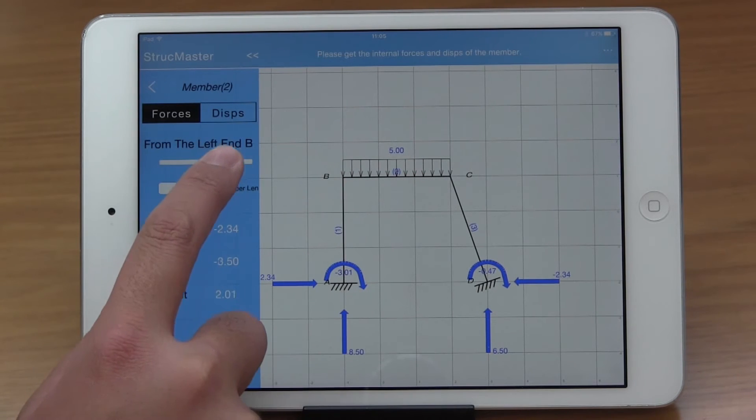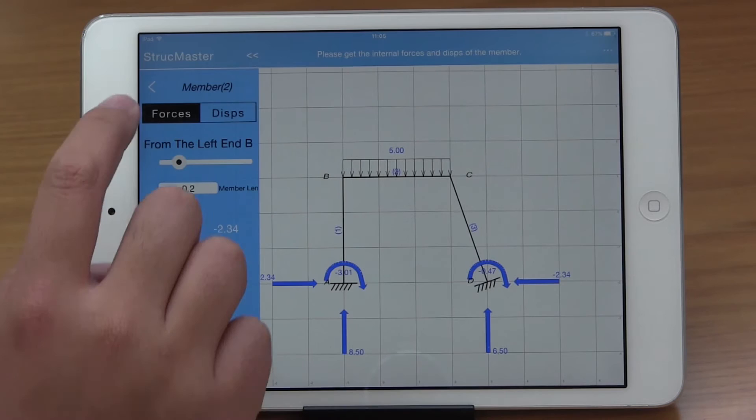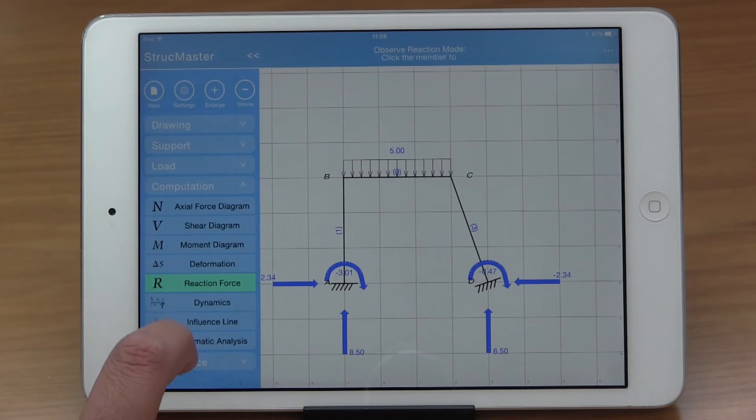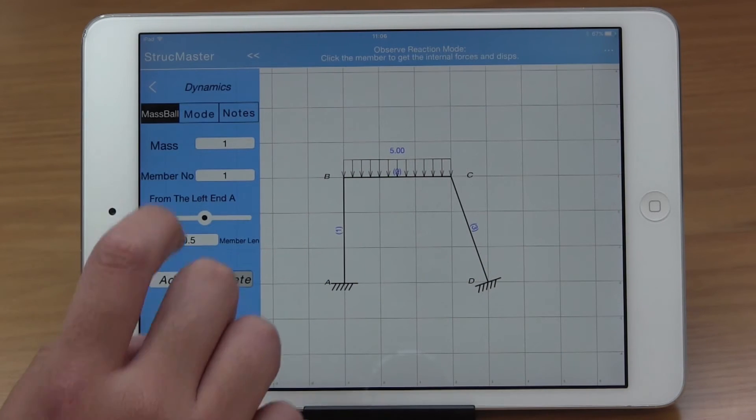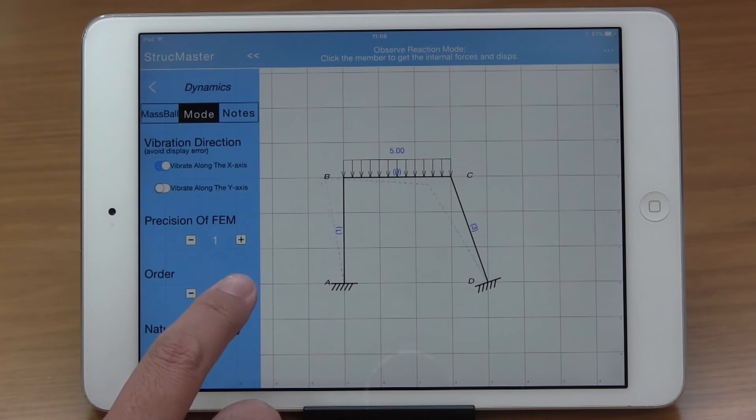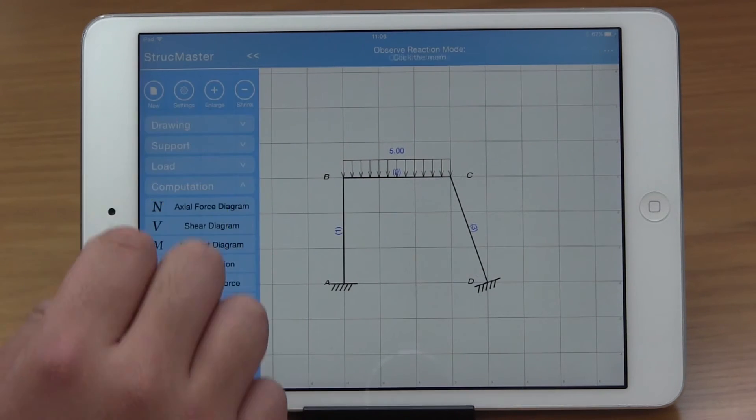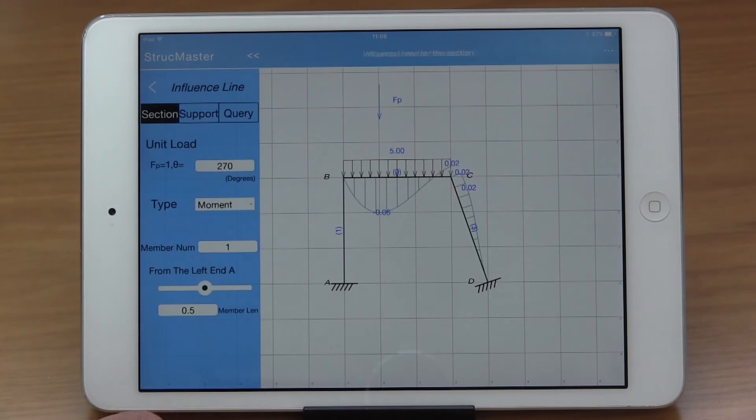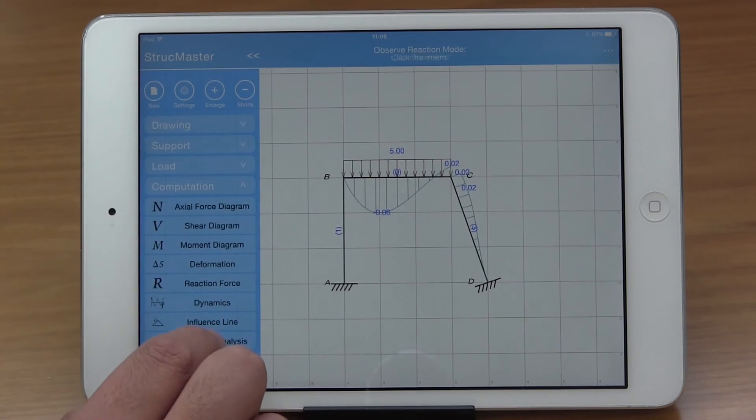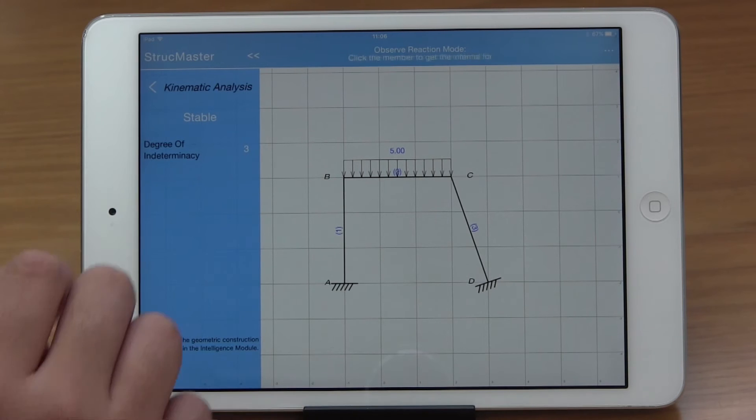After clicking on a member, you can see charts of the internal forces. The Dynamics mode can show you the mode animation, the influence line, and the stability analysis.